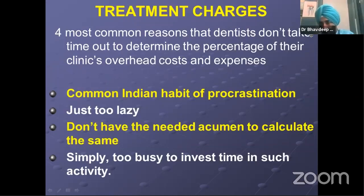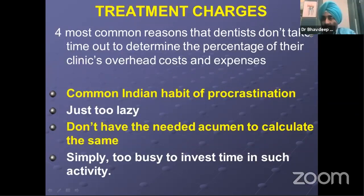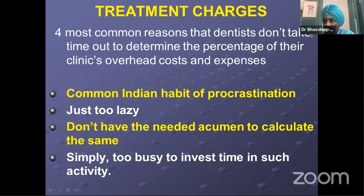What are the most common reasons we don't take time to determine the percentage of clinic overheads or costs? We always look at just the direct cost — let's suppose I consumed ₹200 of composite and bond, and charging ₹500, I'm earning ₹300. We forget the overhead. We forget staff salaries and bills. Looking at only the direct cost is our biggest mistake. Common Indian habit: main kal karunga — procrastination. We hate maths, we don't have the equipment to calculate, and we are simply too busy to invest time.